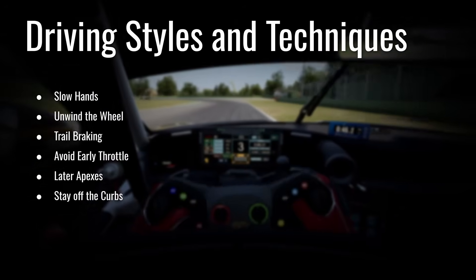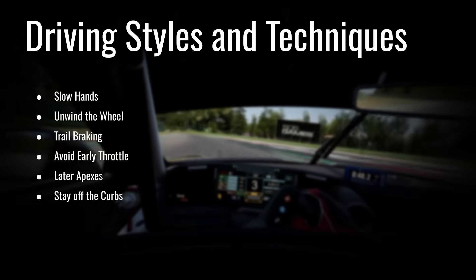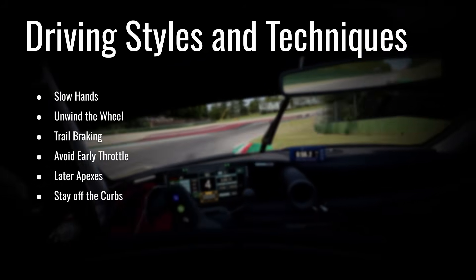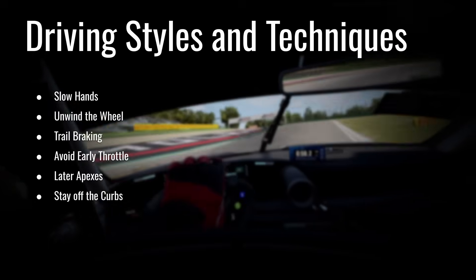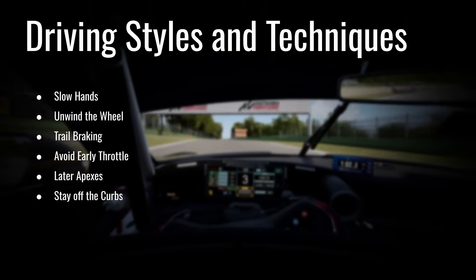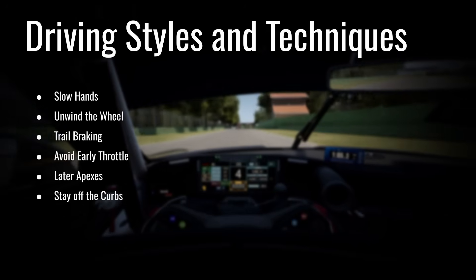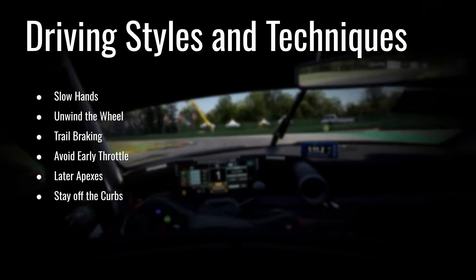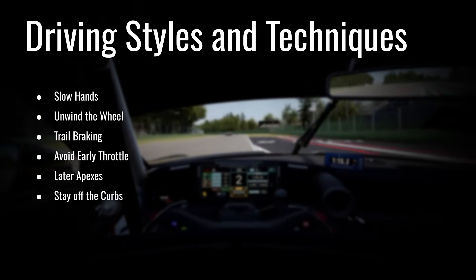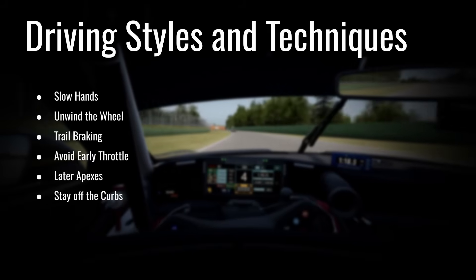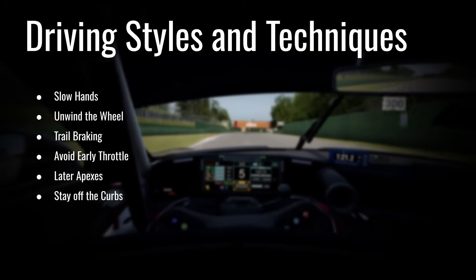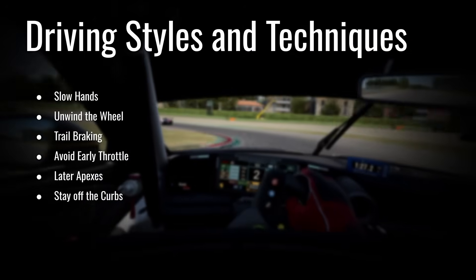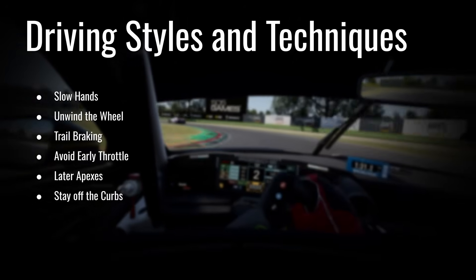For driving styles and techniques, the main thing you want to do is have slow and deliberate hands. Slow down your hands so that when you're turning in, you're not immediately hammering a 90-degree angle on the wheel — ease into it. That way you'll better feel where you're actually losing grip. Take it slow with the turn-in and find where you can hold grip. At the point where you feel grip starting to loosen and the front tires begin to slide, unwind the wheel toward center, back to where you have grip, so the movement of the wheel matches the movement of the vehicle.